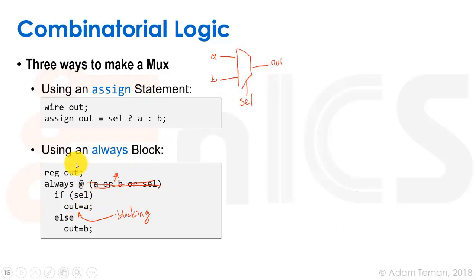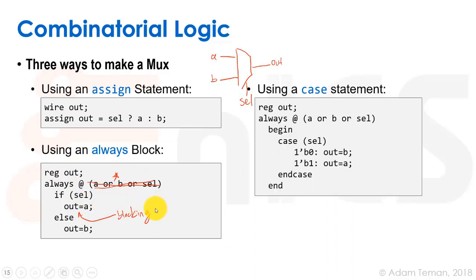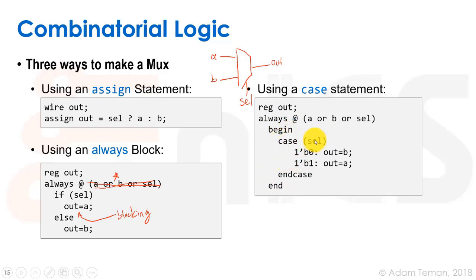A third way is to use an always block with a case statement. Since it's an always block, we use a reg for 'out'. We write 'always @(*)' with a case on 'sel': if sel is zero, out equals b; if sel is one, out equals a. We use blocking assignments here. These three examples show how to write the same MUX and illustrate the difference between reg and wire.